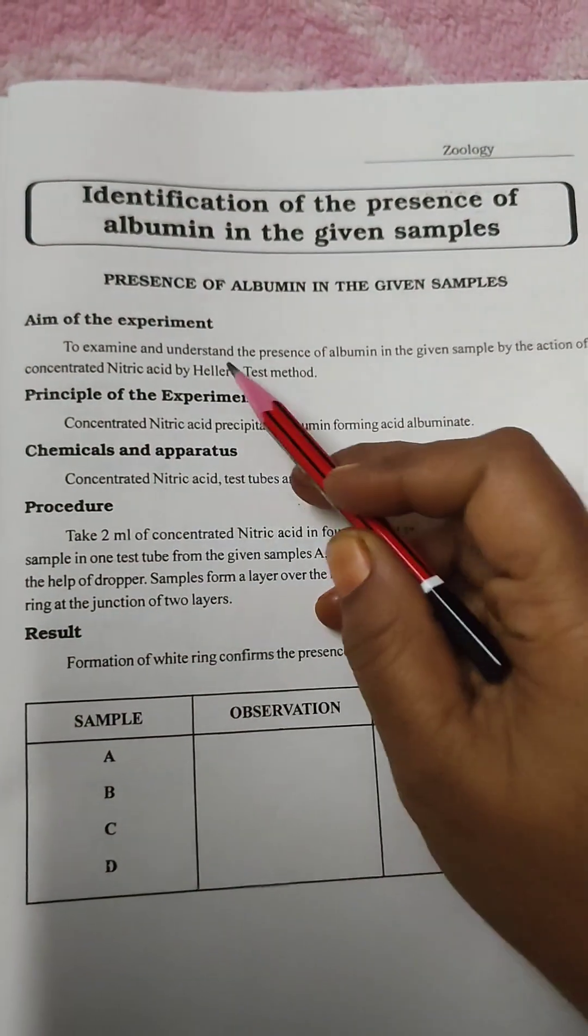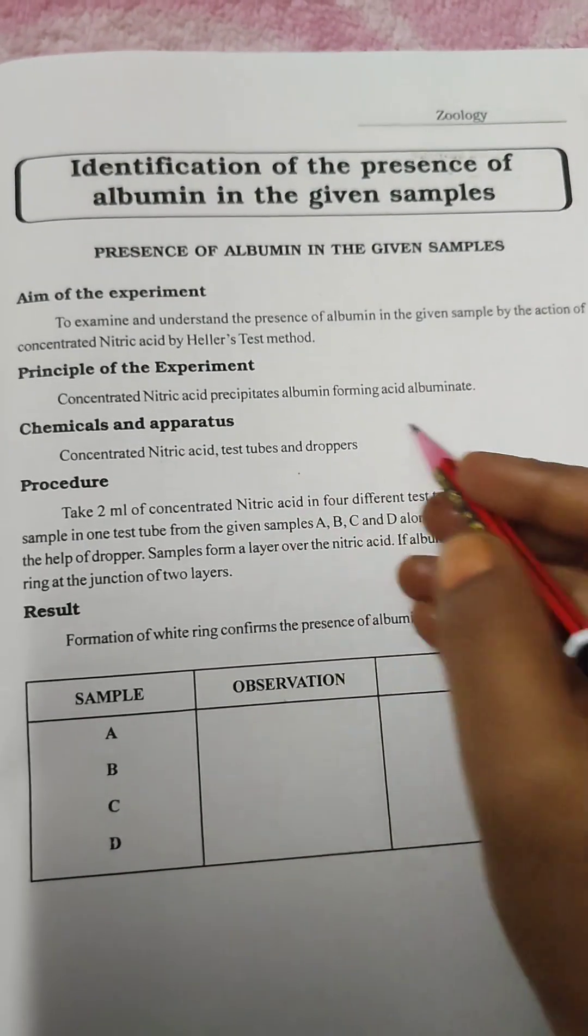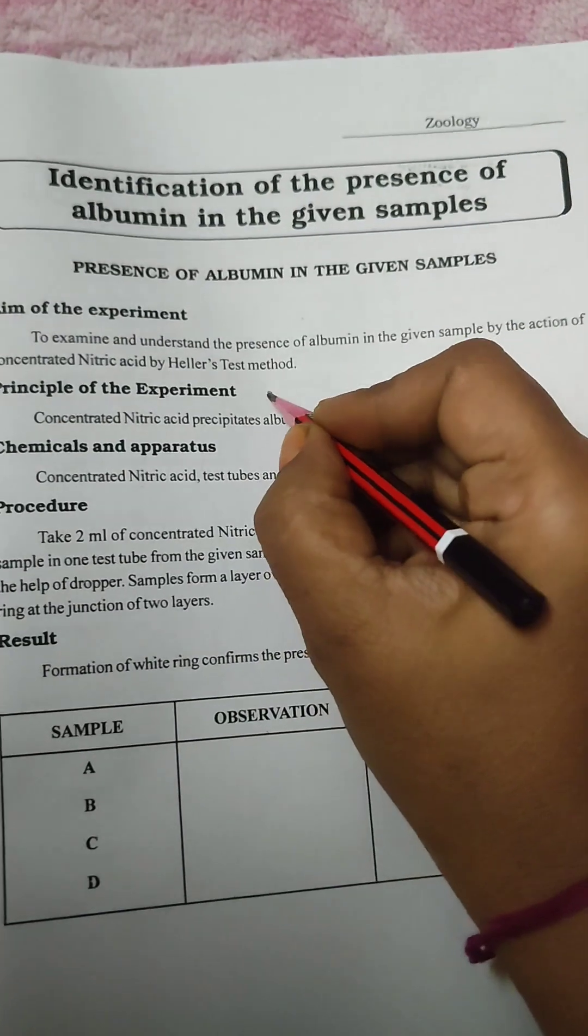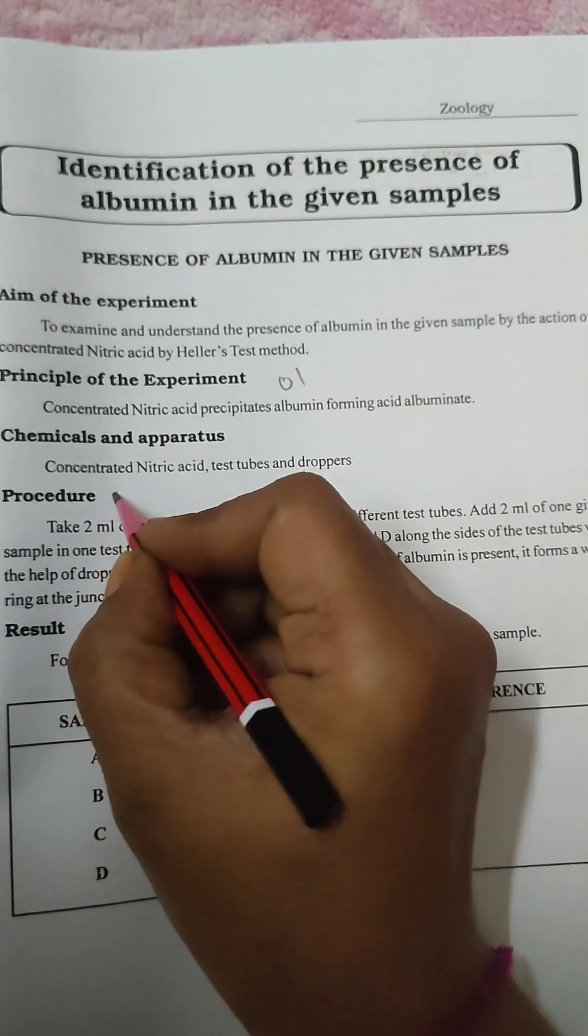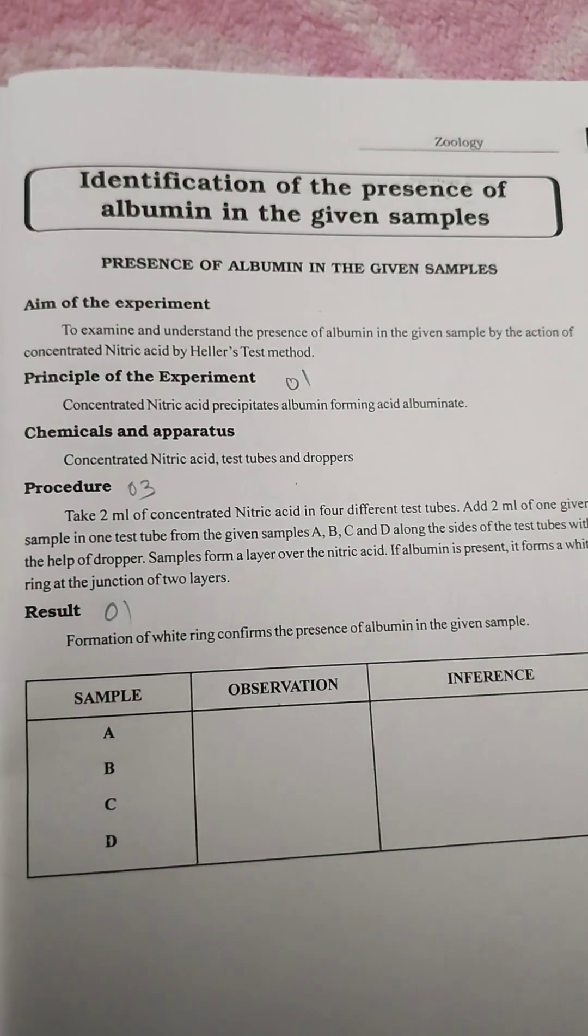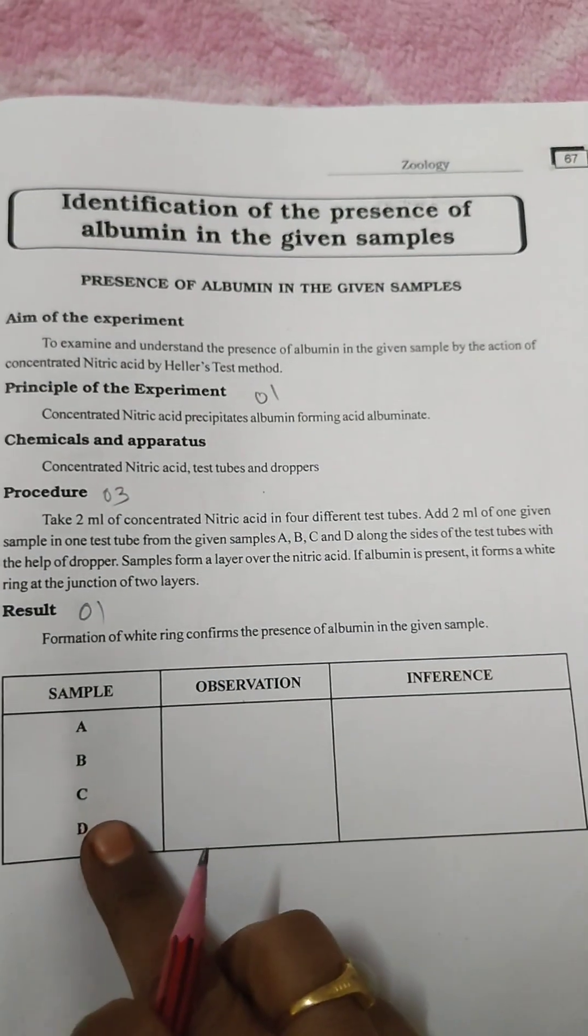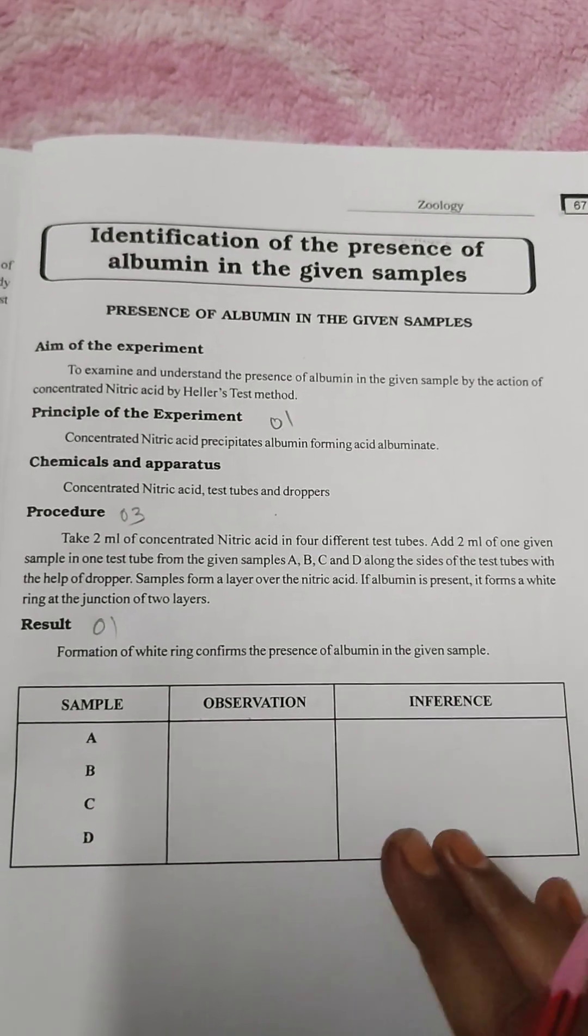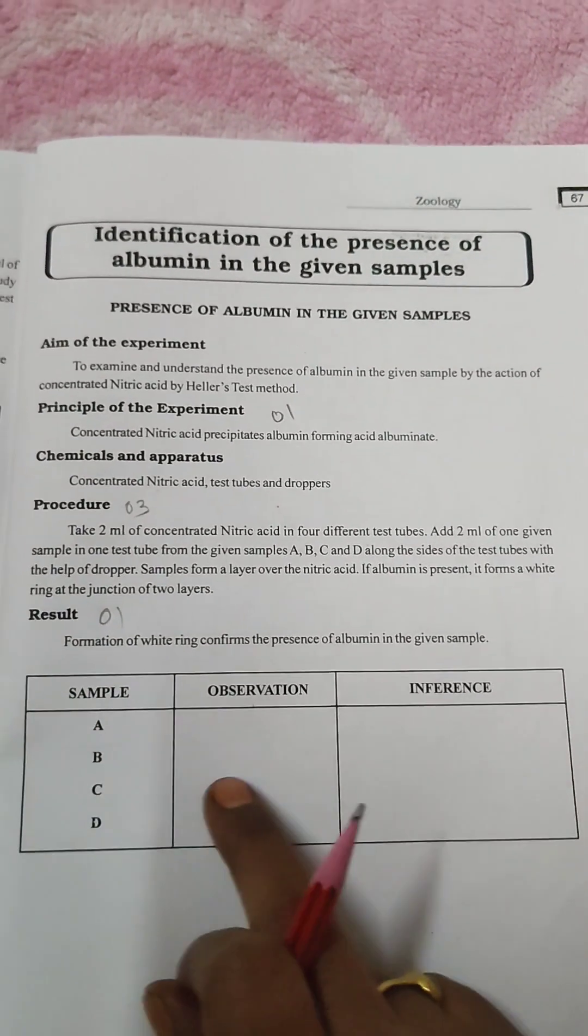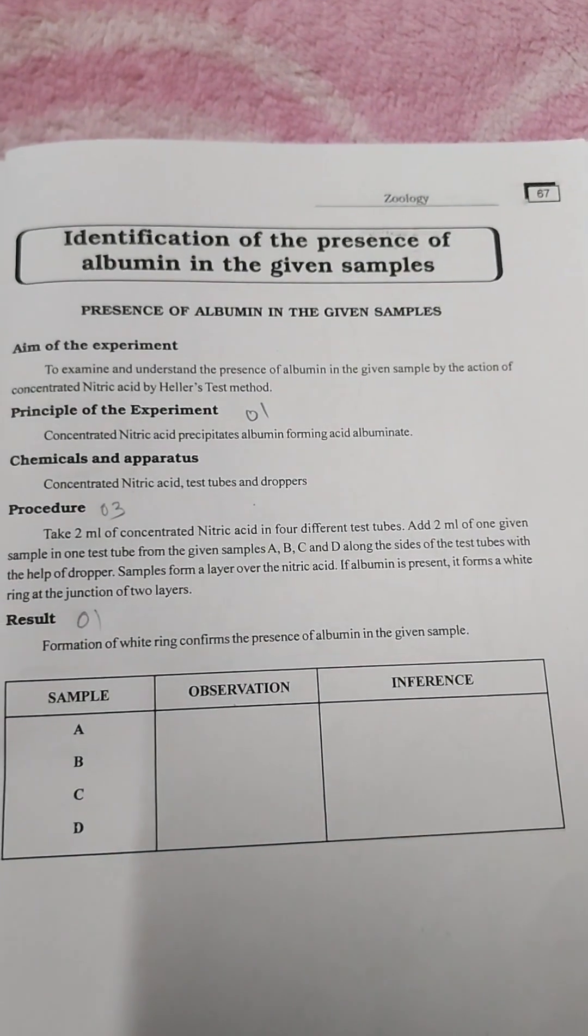Same here as usual: aim of the experiment, principle, procedure and results. For principle 1 mark, procedure 3 marks and for result 1 mark. We have to write all this and the result. Most people forget to write the result and don't mention it in this format, so they may lose 1 mark.